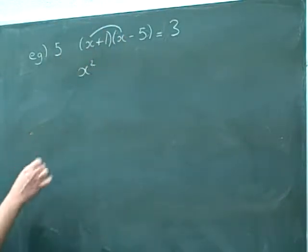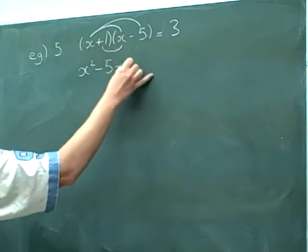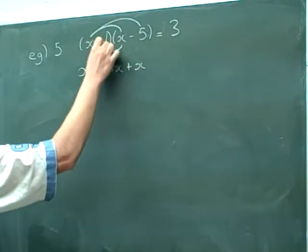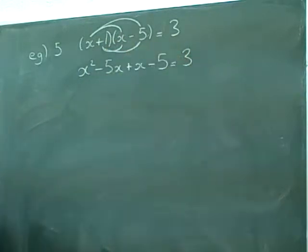So x times x is x squared. x times negative 5, negative 5x. 1 times x is just x. And 1 times negative 5 is negative 5.